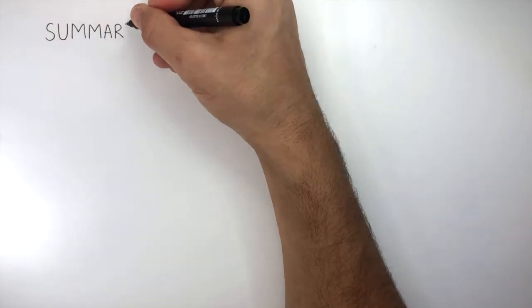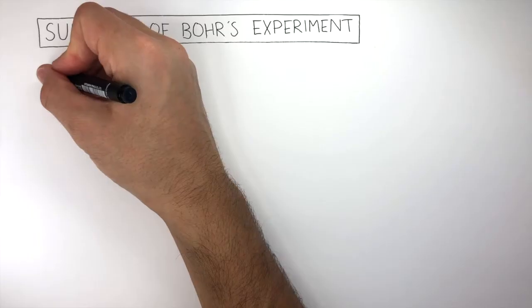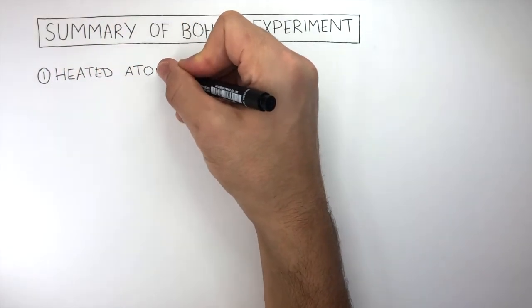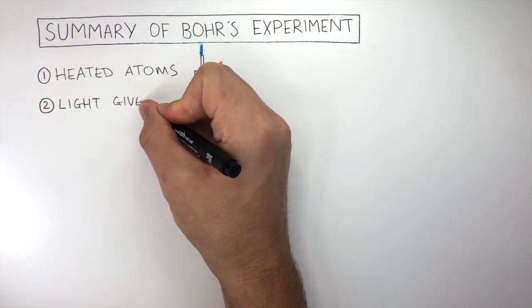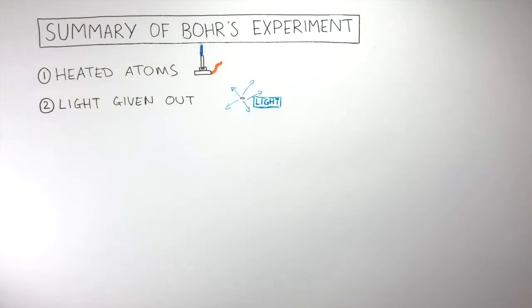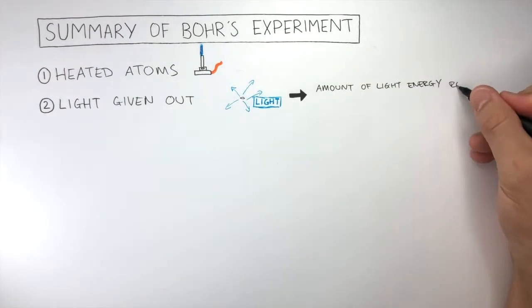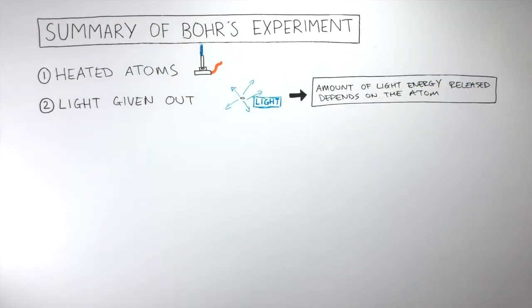Let's now go through a summary of Bohr's experiment. First, he heated atoms. Second, light energy was given out, and the amount of light energy released depends on the atom.